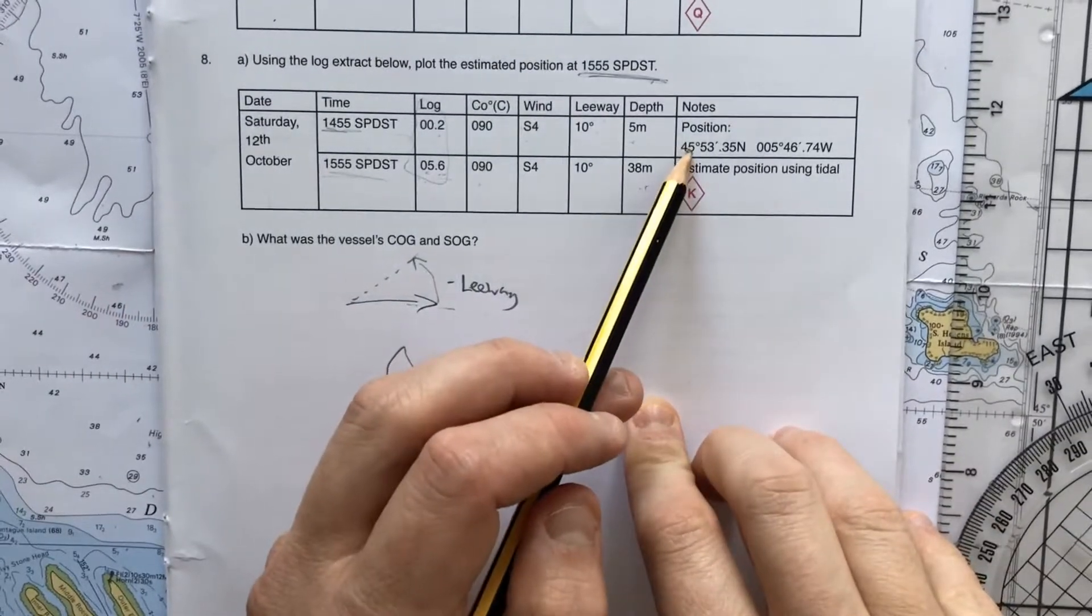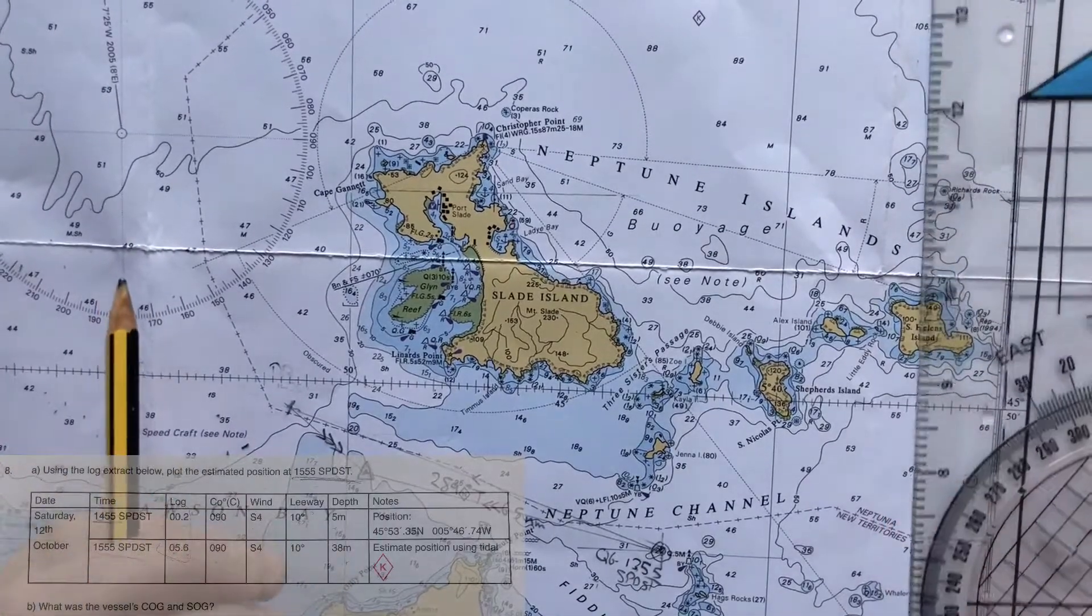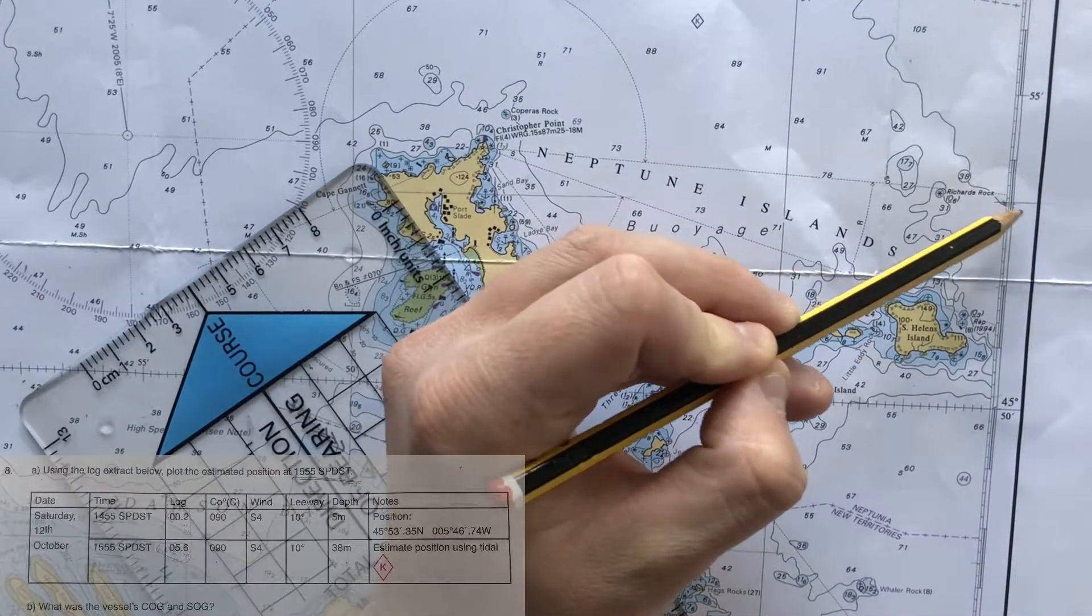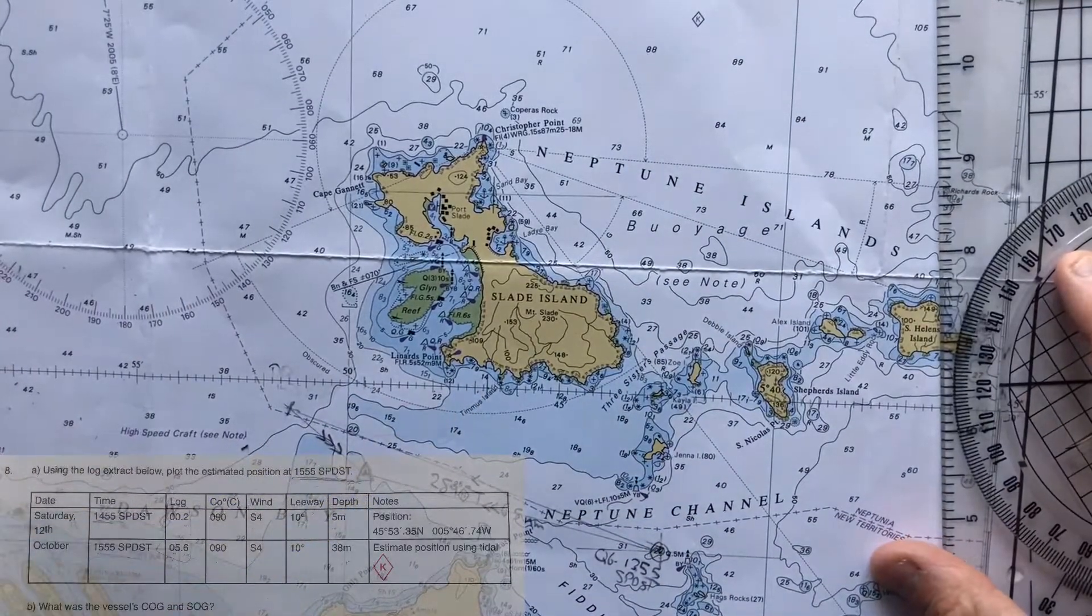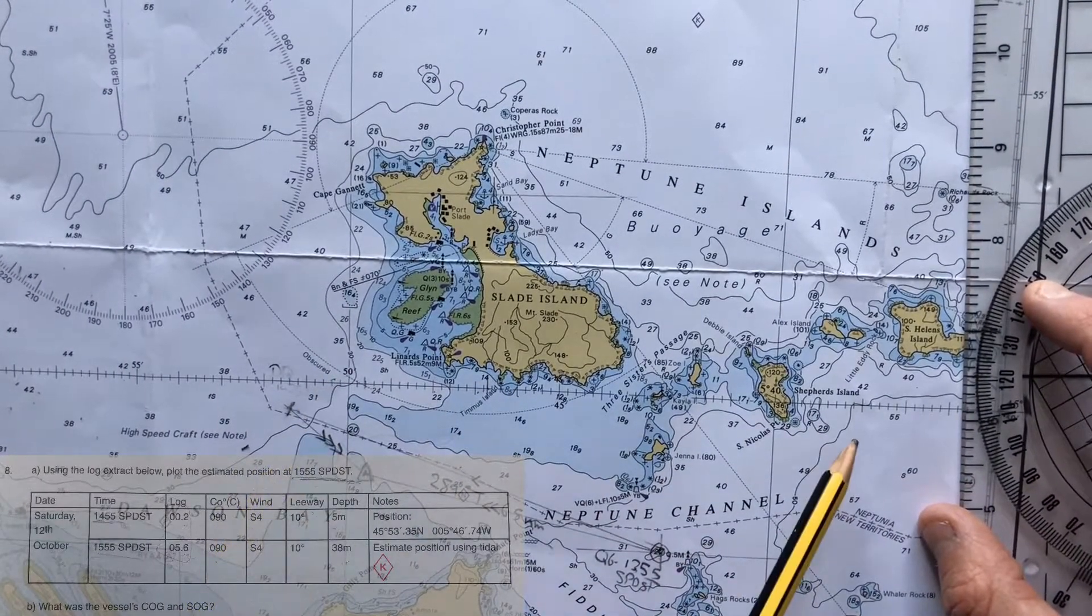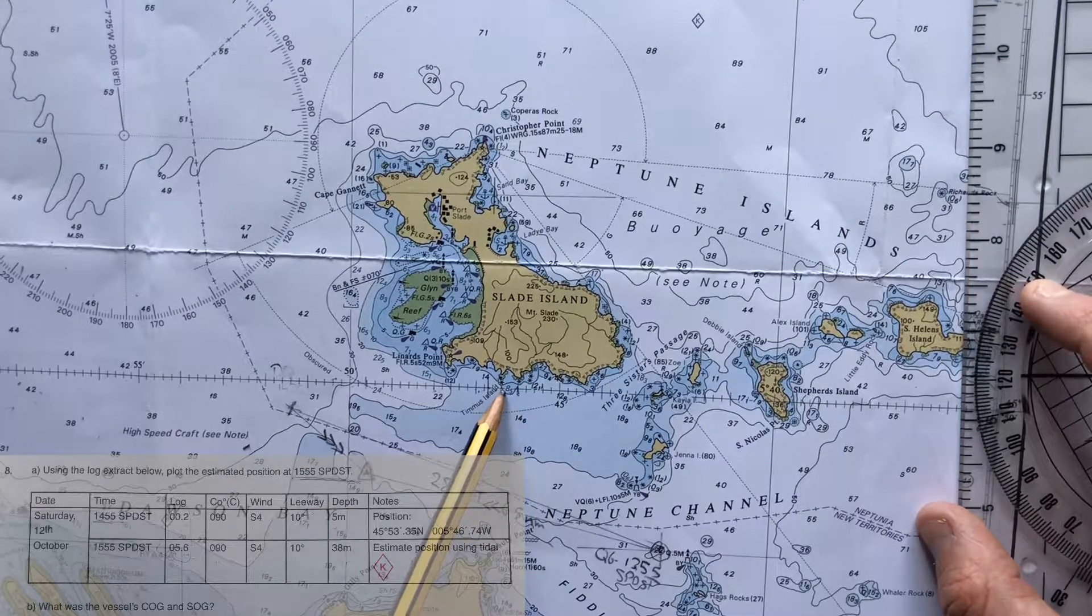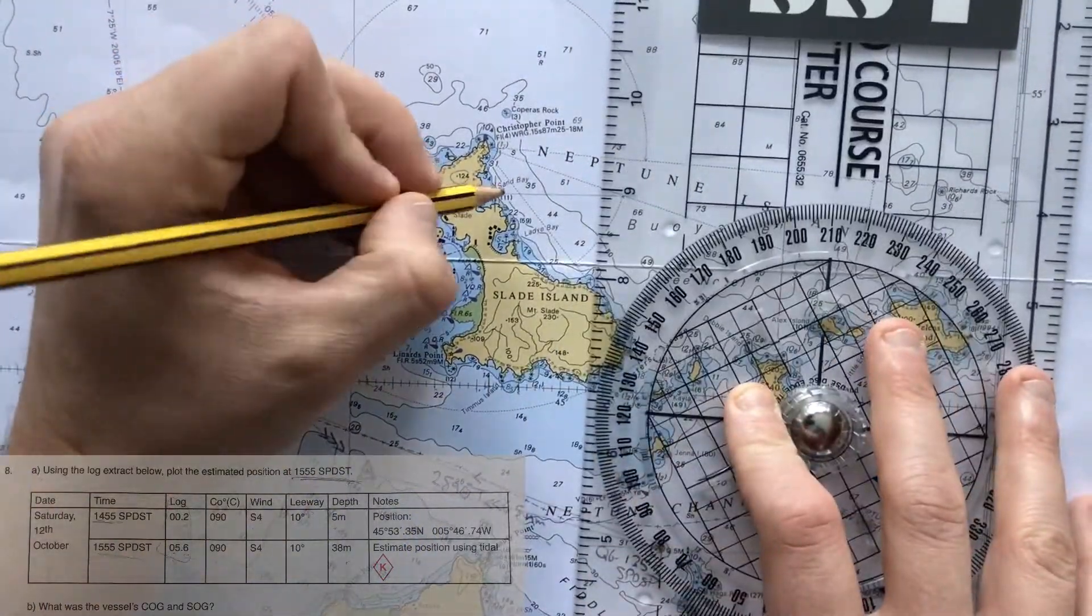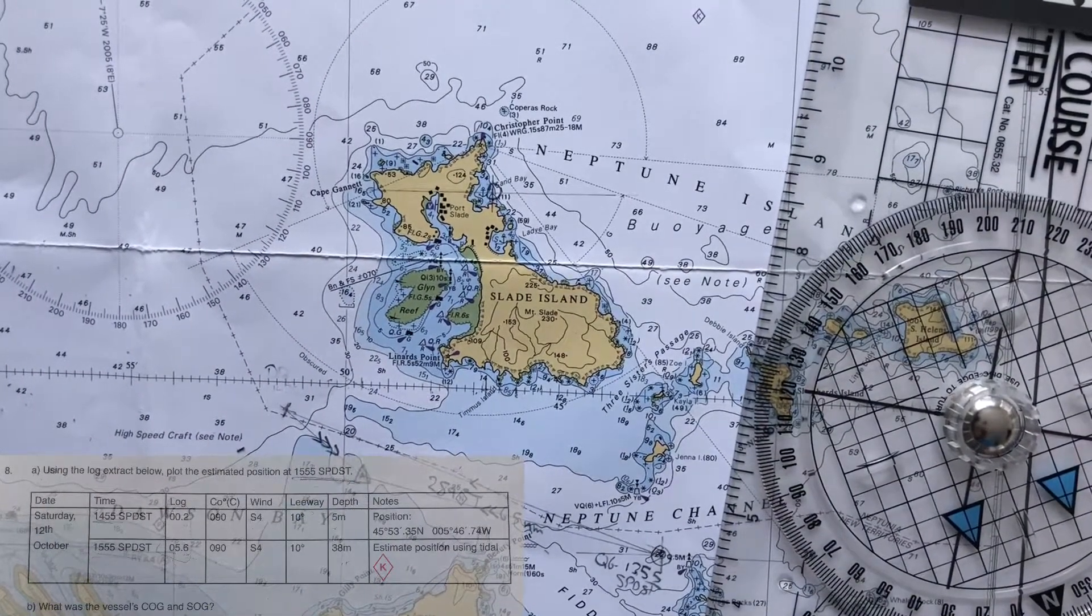So to get started, I'm going to plot my position. I've got 45 degrees 53.35. So I've got 45, 50, 1, 2, 3, 0.35. I've marked that there and I've just drawn a line across the chart. Then I go to my longitude, so I've got 05 46.7. So I've got 05, 40, 05, 50. So 46 - well there's 50, 49, 48, 47, 46 is here and 0.7 - 2, 4, 6, 7 there. So that's given me my fix just in here. And that makes sense because that's on my five metre contour line in Sand Bay.